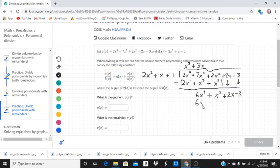3x times 2x squared is going to be 6x cubed. And 3x times x is going to be plus 3x squared. And 3x times 1 is plus 3x.